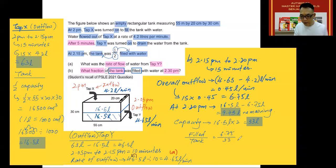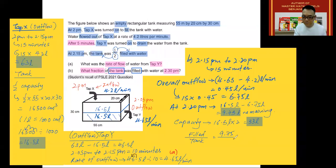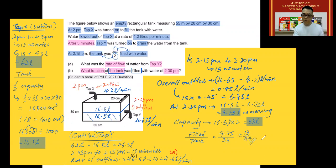Always leave your answer in the simplest form. 9.75 divided by 33 gives 13 out of 44. That is the answer for Part B. Review this and look at it as many times as you need to understand the different parts.